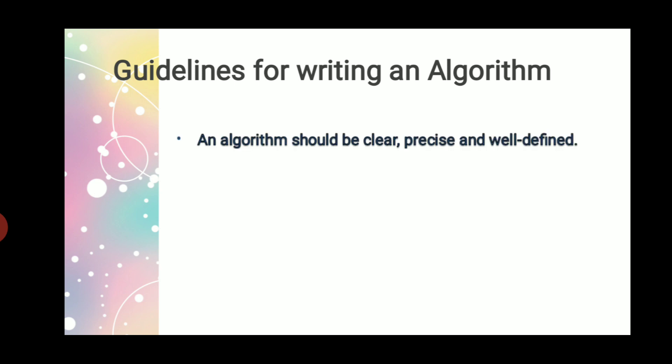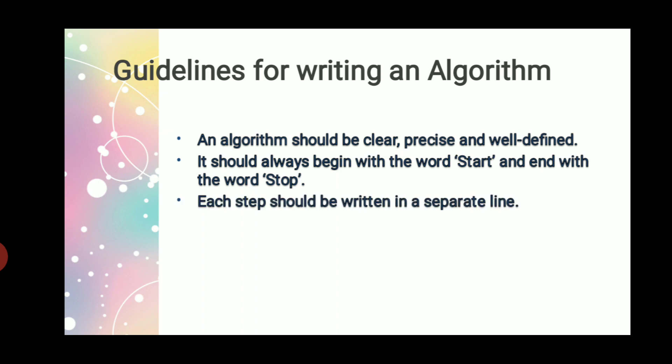In programming, how do you write an algorithm? There are a few guidelines you need to follow. An algorithm should be clear and well-defined. You should not use words like 'and,' 'or,' or 'so' too much. It should always start with the word 'Start' and end with the word 'Stop.' Each step should be in a separate line and steps should be numbered as Step 1, Step 2, like that.